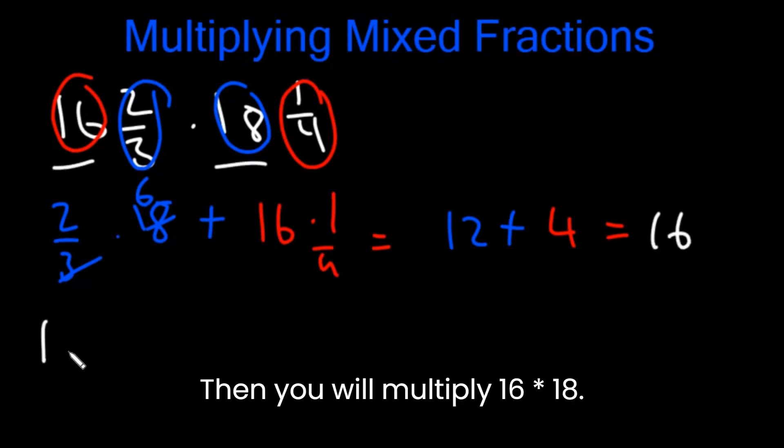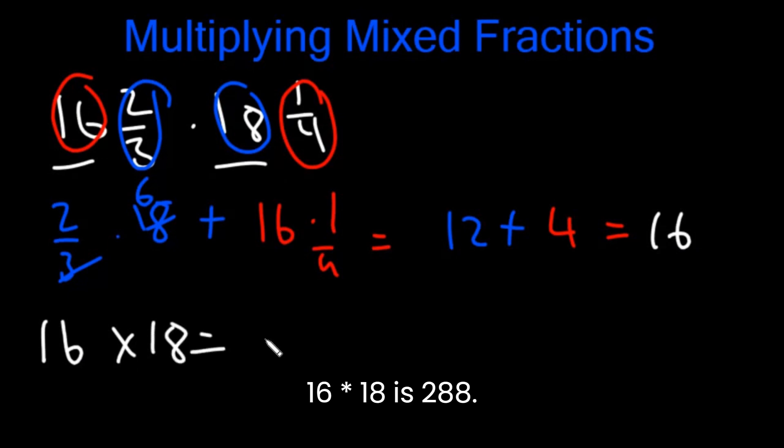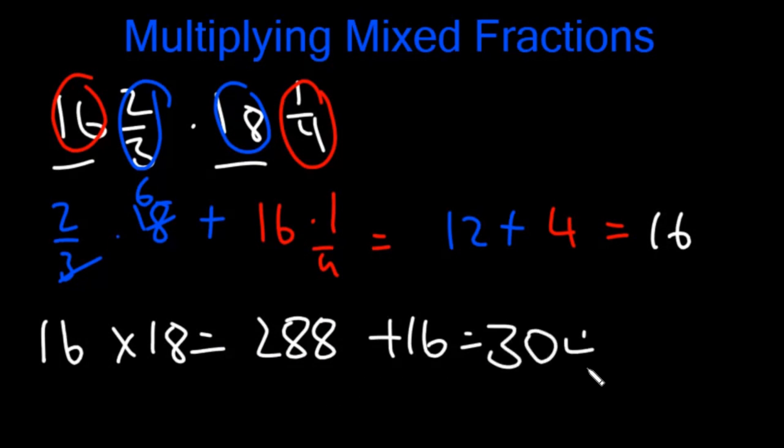Then you will multiply 16 times 18. 16 times 18 is 288. Plus 16 is 304. Not 200. 304. And so this is our number part.